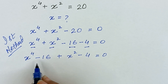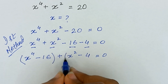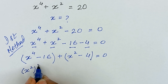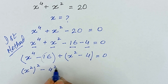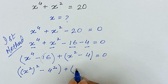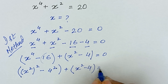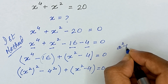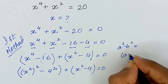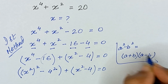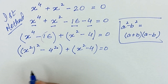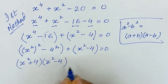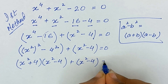Now here we have x raised to the power 4 minus 16. We can write x raised to the power 4 as x squared, quantity squared, and 16 can be written as 4 squared. So it is in the form of a squared minus b squared. Since a squared minus b squared equals a plus b times a minus b, it will become x squared plus 4 times x squared minus 4, plus x squared minus 4, equal to 0.